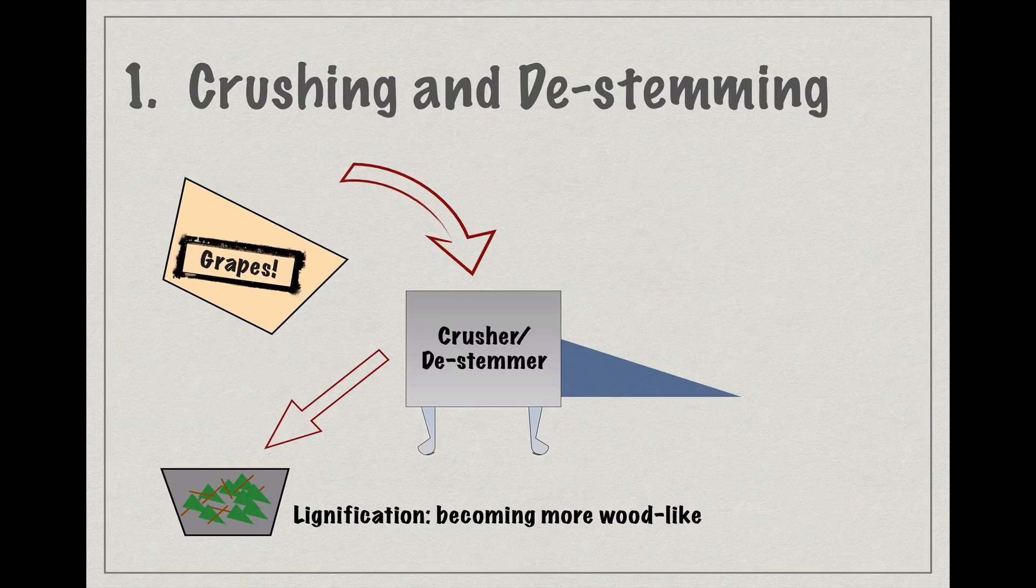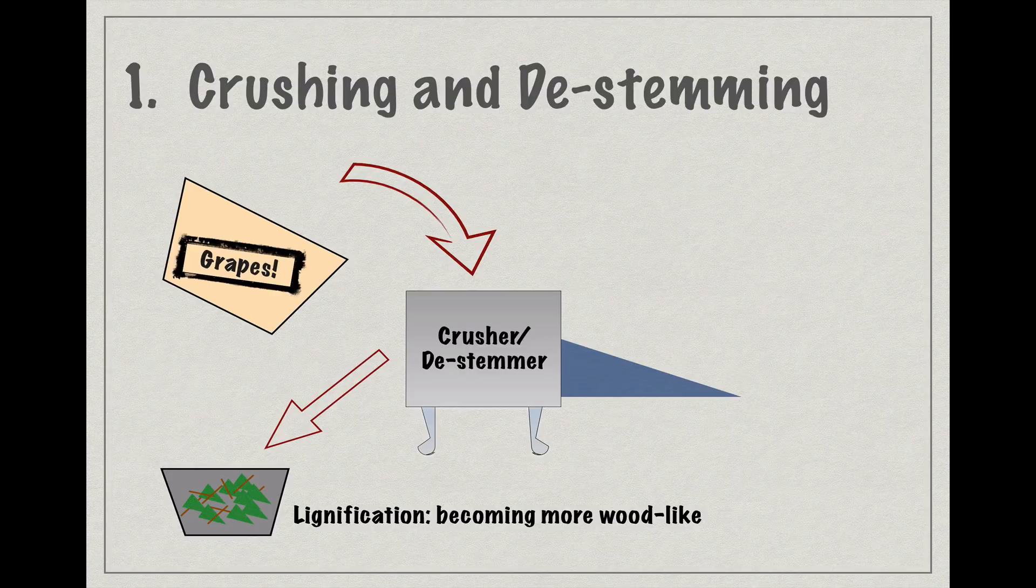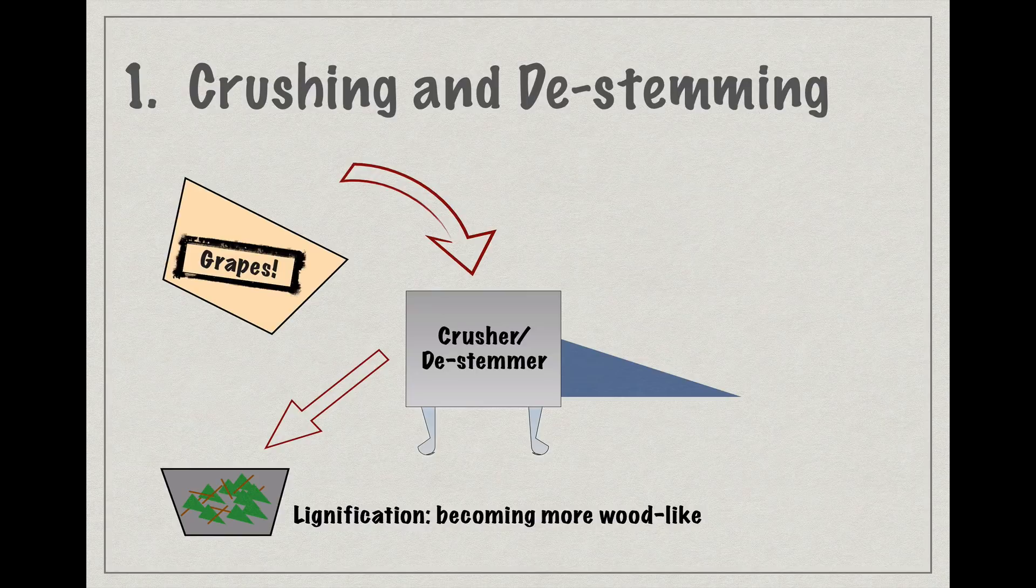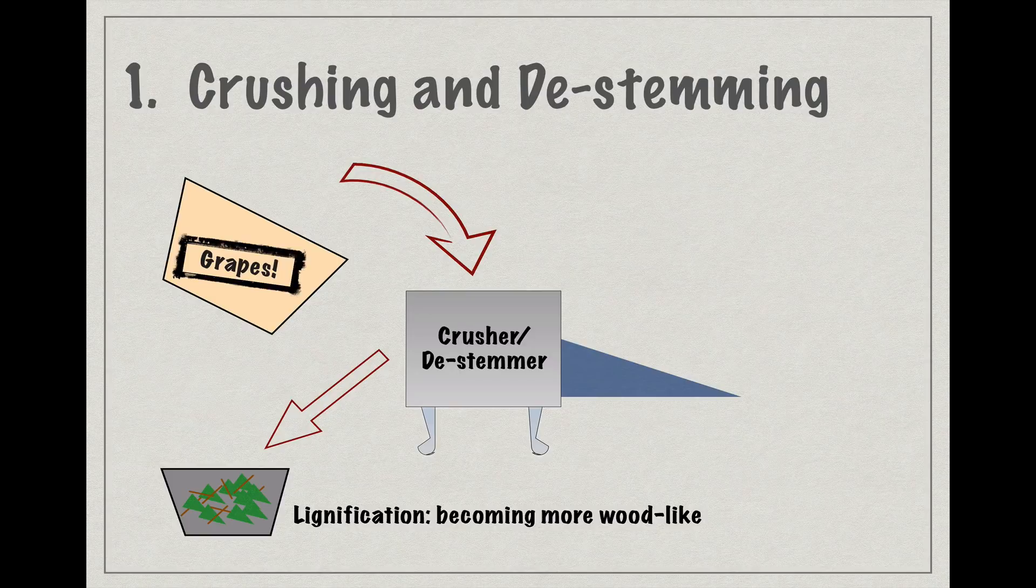Stems can also moderate the acid and sugar levels in the juice if they're left in. So a winemaker may decide to turn the de-stemmer off and just crush the grapes with the stems on in order to add tannins or desirable flavor characteristics to the wine he hopes to make. Alternately, he can de-stem and then add a portion of the stems back to the juice.